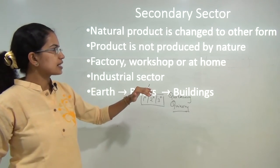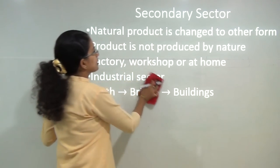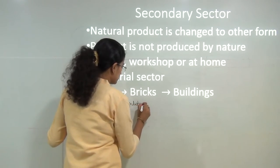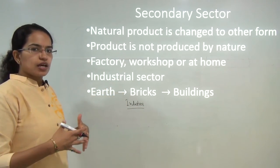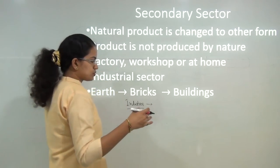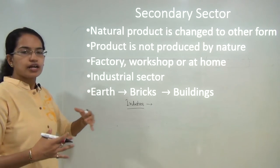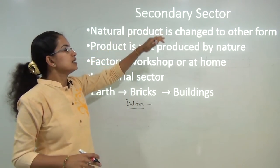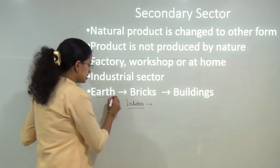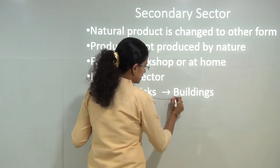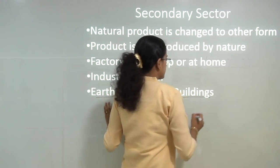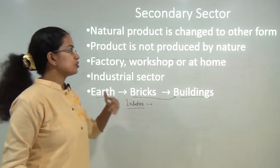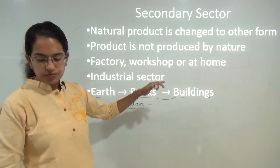The next is the secondary sector. Under secondary sector, what we are doing is changing the form of the natural product that we have. It could be either in industries or in factories — these could be either home-based industries or big industrial setups. It could be workshops, small factories, big factories, or home-based artisan workshops. For example, from the earth we get bricks and we transform or use these bricks to make buildings. So from the natural resource, we are changing it to some other form to utilise it — this is not a direct product from nature.